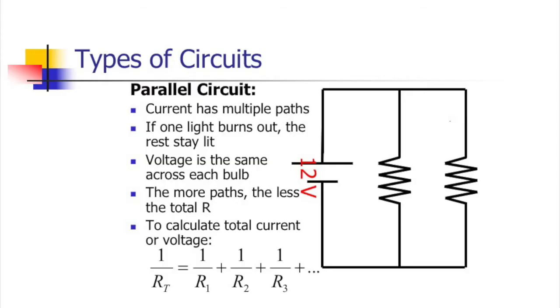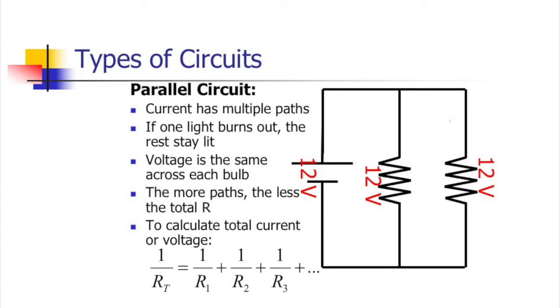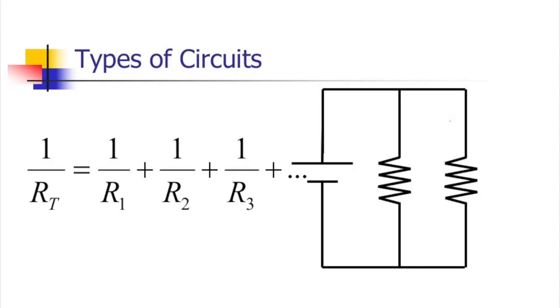For voltages in a parallel circuit: with a 12-volt battery and two resistors in parallel, there must be 12 volts across each resistor. The equation for total or equivalent resistance in parallel is: 1 over R-total equals 1 over R1 plus 1 over R2. You cannot simplify that to R-total equals R1 plus R2 — they're different equations.